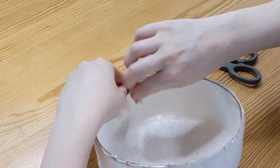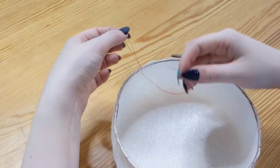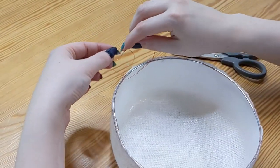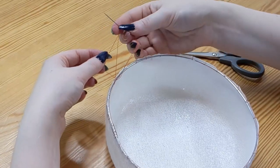To tie off the thread, make a loop and hook the needle through three times, then pull through. This should give a good tight knot.